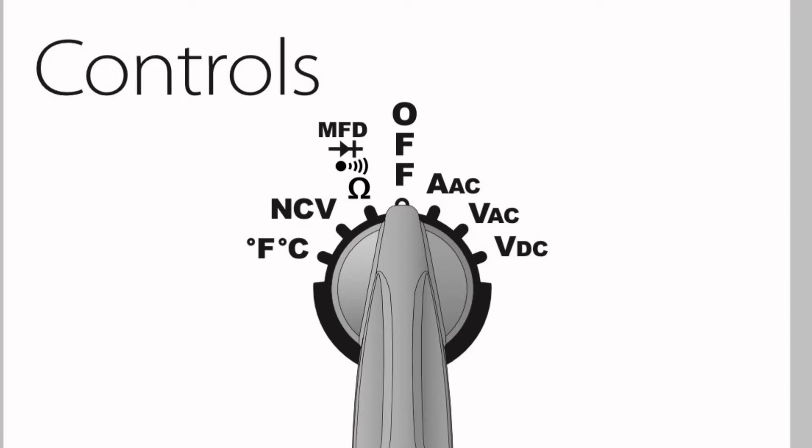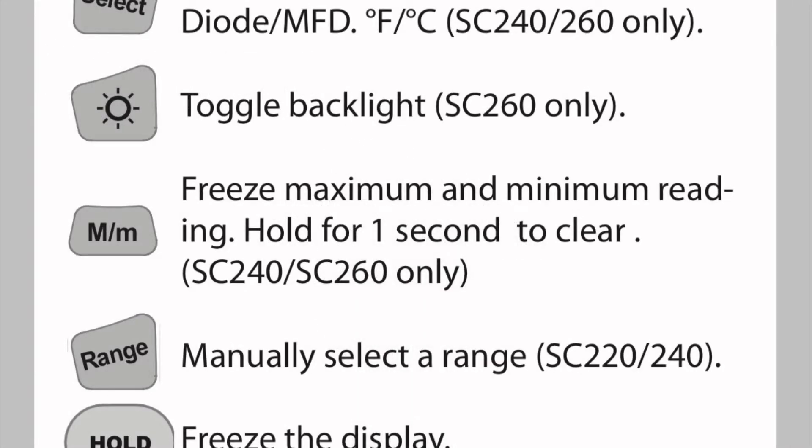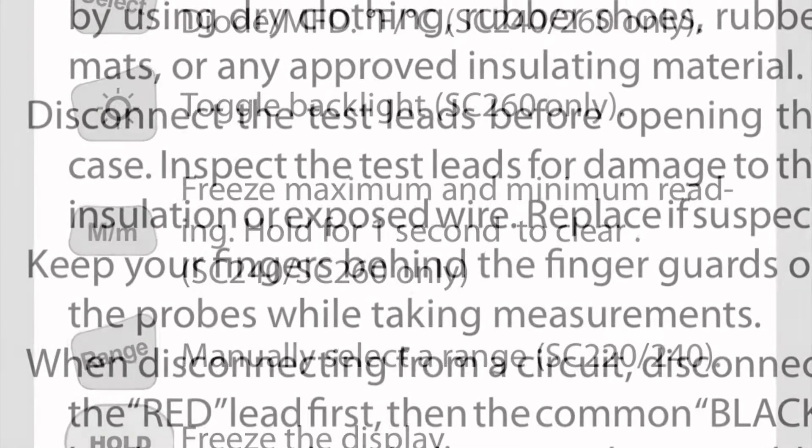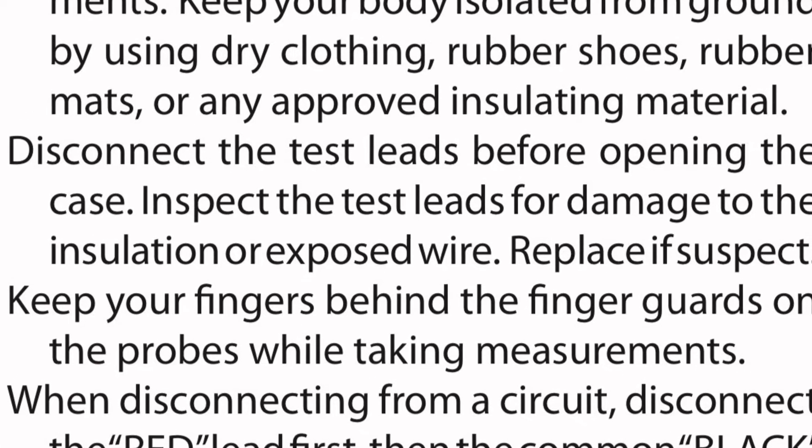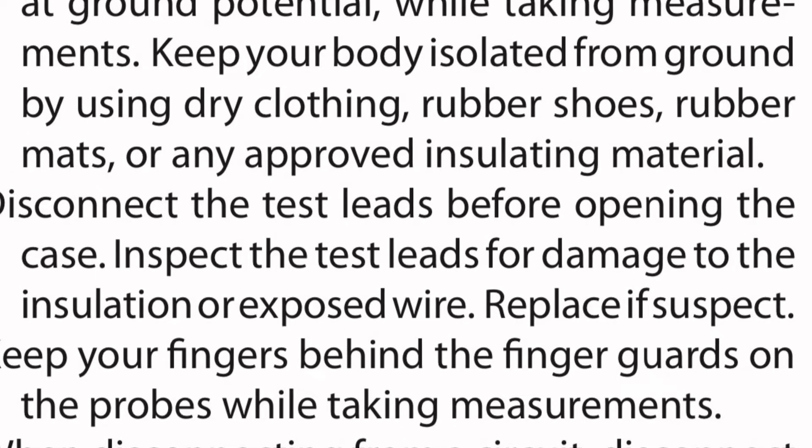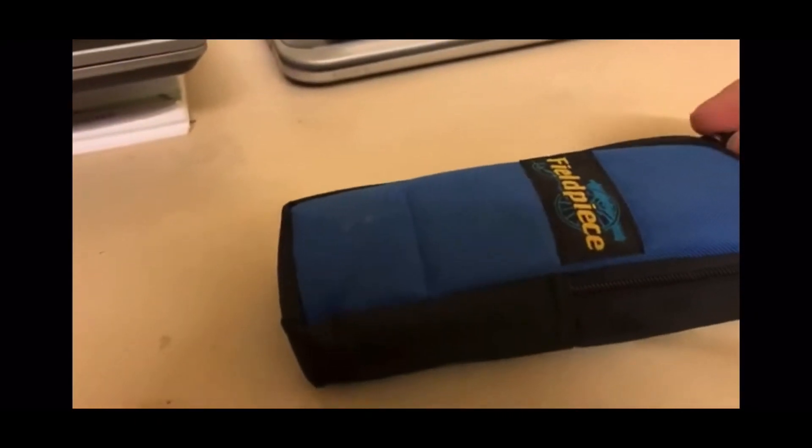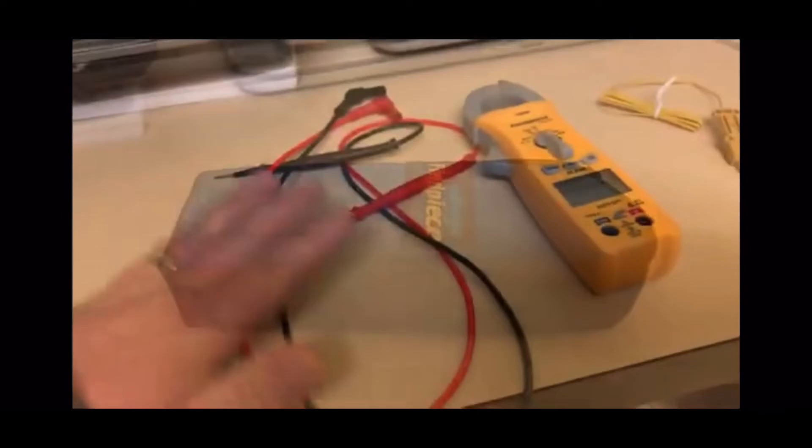Before I get it out of the bag, I want to show you some features of the control. As you can see, this is the main control of selection where you can select the kind of voltage and different options. We have the toggles and buttons on the bottom: the light, the select button to change modes, maximum and minimum reading, hold, and range which you can change manually or automatically. Let's talk a little bit about safety. Keep this in a dry, isolated space and make sure the multimeter leads are in good condition.